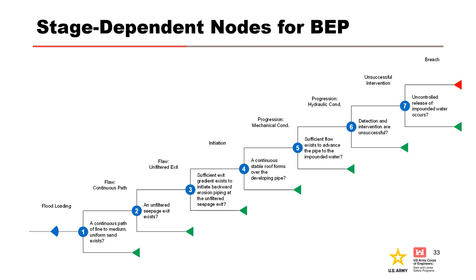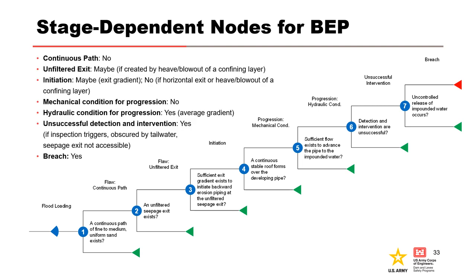Exits may become submerged with elevated tailwater. Intervention depends on timing, but access may be cut off by the reservoir or spillway releases. Breach can be a function of stage since freeboard is an important consideration, and for small reservoirs, the reservoir level may fall below the base of a pipe. In the generic backward erosion piping event tree, a continuous path is a state of nature and not stage-dependent. The unfiltered exit can be a function of stage if created by heave or blowout of a cover layer. Initiation is a function of stage for vertical exit conditions, but not for horizontal exits. Roofing is related to mechanical conditions and is not stage-dependent. Average gradient is a function of stage and is used to assess the hydraulic condition for progression.